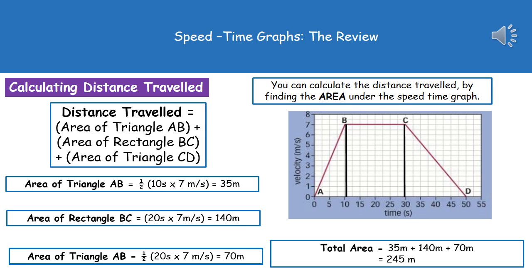And then finally, triangle CD there. So we're going to go from 30 to 50, which is 20 seconds, and again it's a 7 meters per second speed. So that tells us it's going to be 20 times 7 times the half. Once more, as we're talking about a triangle, gives us 70 meters.